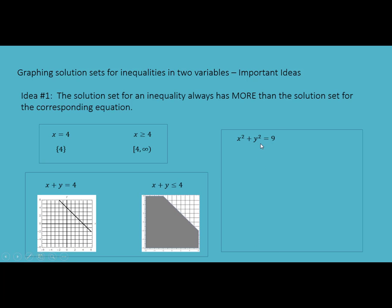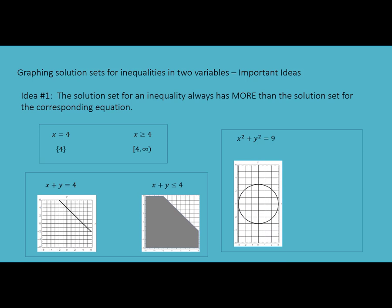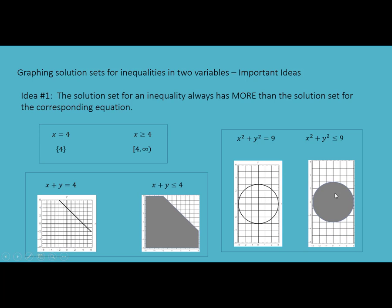Here's a non-linear equation — you might recognize this as the equation of a circle. If we're looking for all the ordered pairs that make this equation true, there are infinitely many, but all of those ordered pairs are points on the circle. If we replace this equation with an inequality, we still have all the ordered pairs that lie on the circle, but we also have either all the ordered pairs outside or inside the circle. A key idea to remember is that anytime we go from an equation to an inequality, we always have more solutions than before.